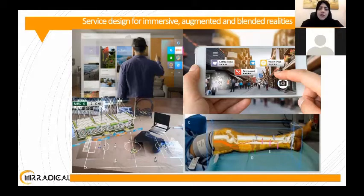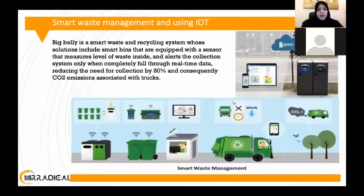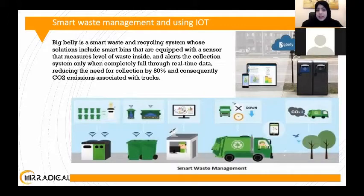Governments are competing towards utilizing these trends to provide health and educational services. The machine and human are now working together — for example in cancer diagnosis, with continuous learning and development in that area. A smart city example: one use of IoT is in waste management, such as a smart recycling system where, when a bin is full, it sends a notification for trucks to collect it — all monitored through a smart system.